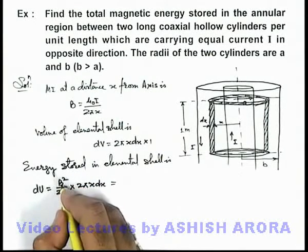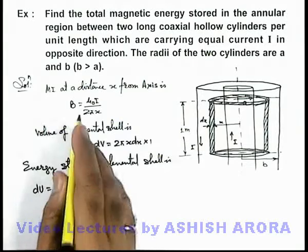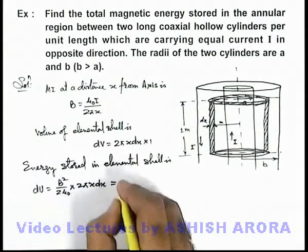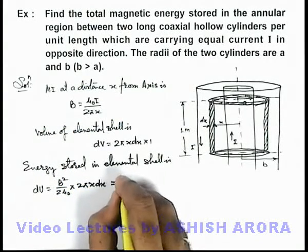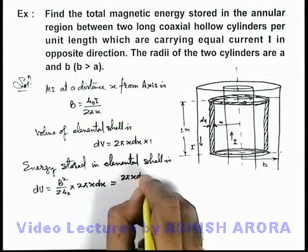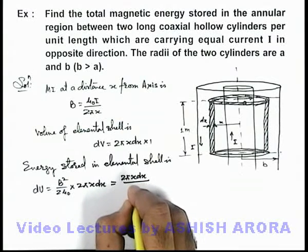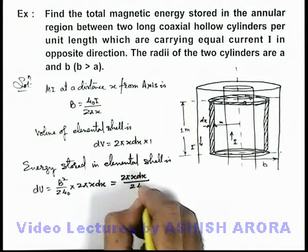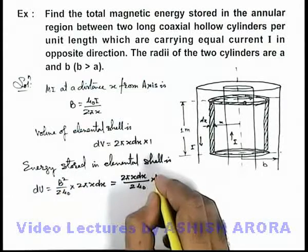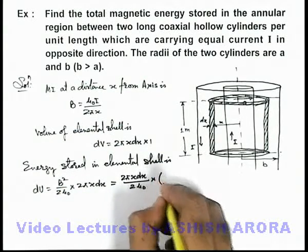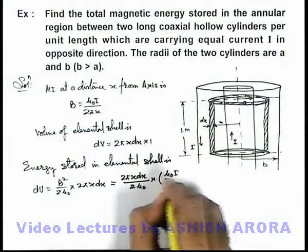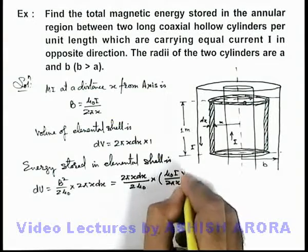And here if we substitute the value of magnetic induction as μ₀I/(2πx), see what we'll be getting. This will be 2πx dx by 2μ₀ multiplied by B² which is in this situation μ₀I/(2πx) whole square.